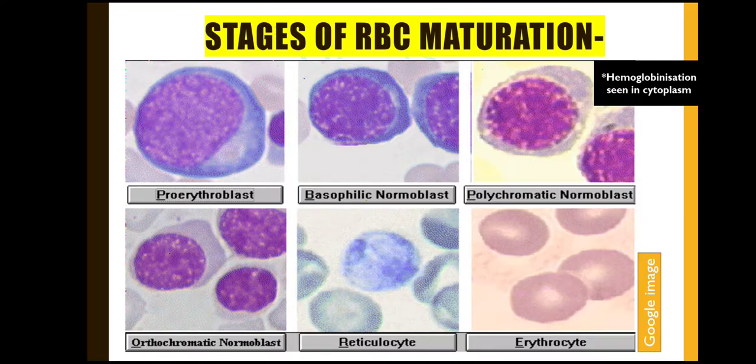In hematopoiesis, the hematopoietic stem cell which is CD34 positive gives rise to the various precursor cells. For an RBC, the precursor cell is the proerythroblast.